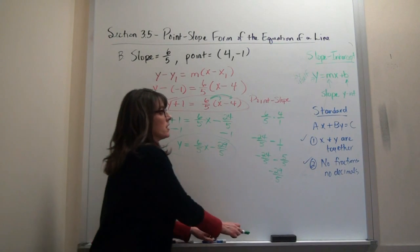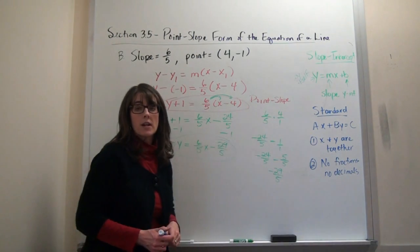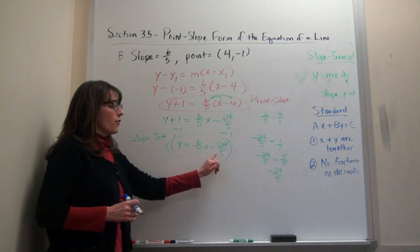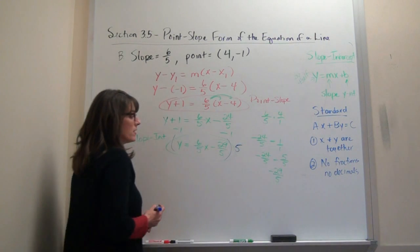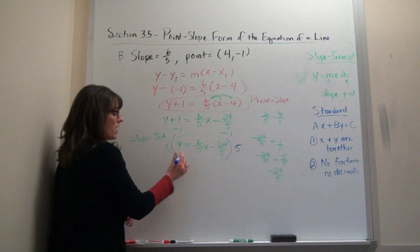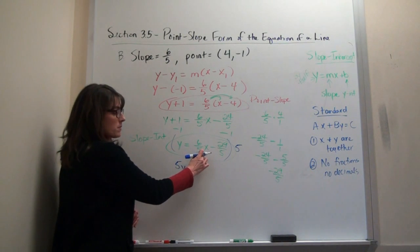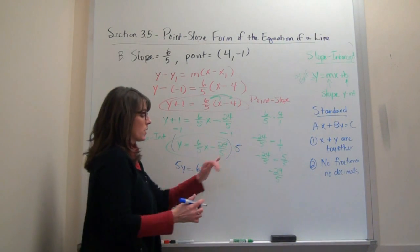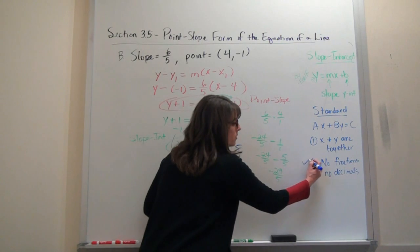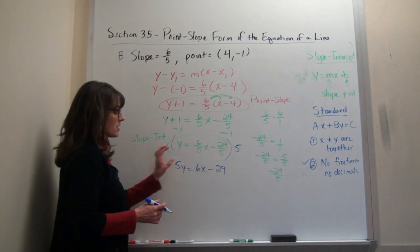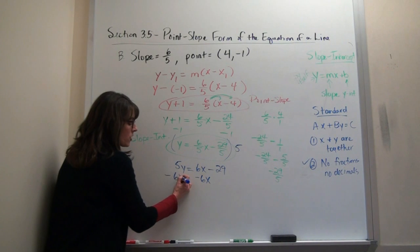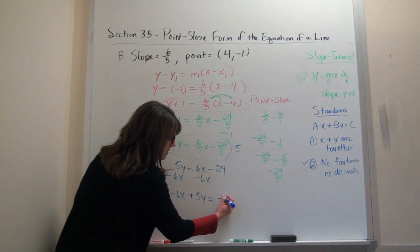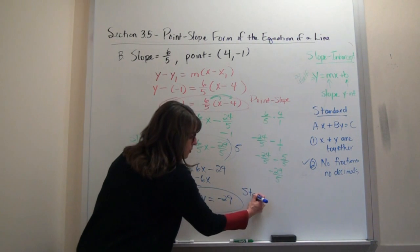For standard form, I'll clear out the fractions by multiplying everything by 5. 5 times y is 5y. 5 times 6 fifths — the fives cancel — giving 6x. 5 times negative 29 fifths — the fives cancel — giving negative 29. Now get the x and y together by subtracting 6x from both sides: negative 6x plus 5y equals negative 29. No fractions, no decimals, x and y together — both criteria are met.